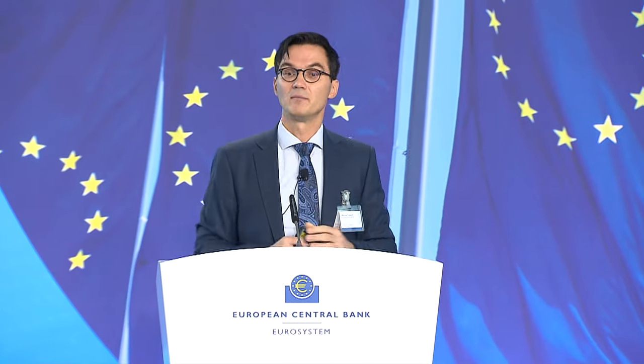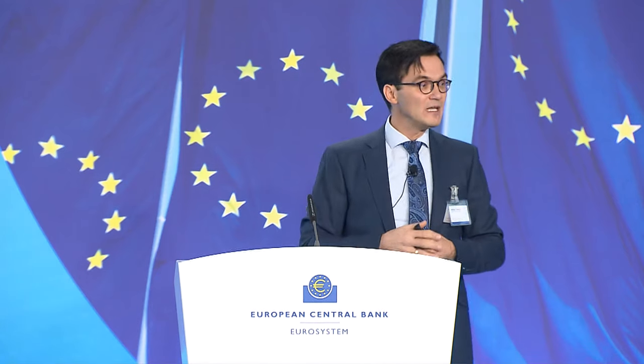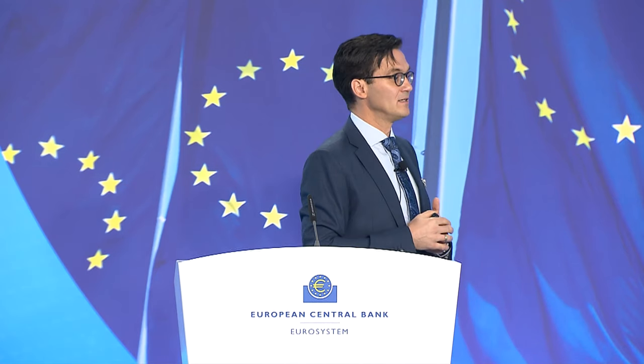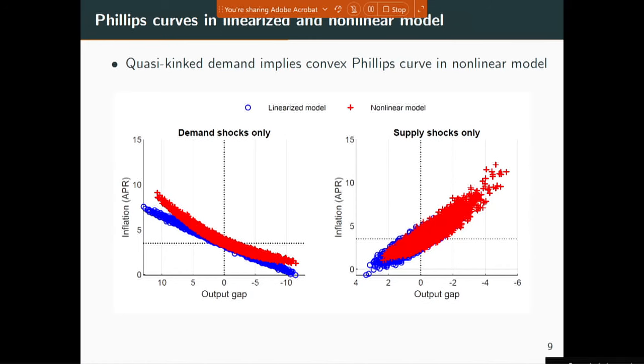Now I'll show you the differences between the linearized model and the nonlinear model implications. With quasi-kinked demand, the Phillips curve becomes convex in the output-inflation space. Consider hitting the model only with demand shocks — the left-hand plot shows the output gap on the x-axis and inflation on the y-axis. In the linearized model you get a linear relationship, depicted by the blue dots in this scatter plot.